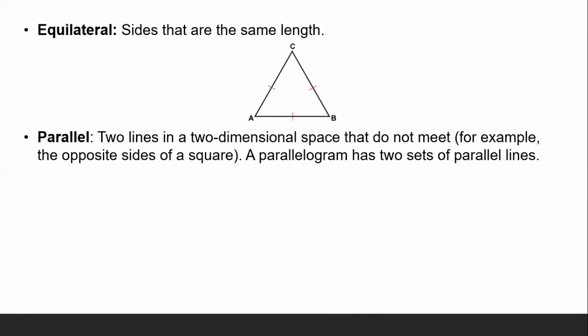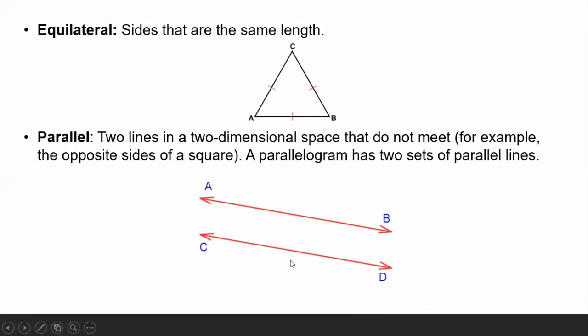A parallelogram has two sets of parallel lines. It is a kind of quadrilateral and is the best example of parallel lines — lines that do not meet or intersect, even if extended infinitely.